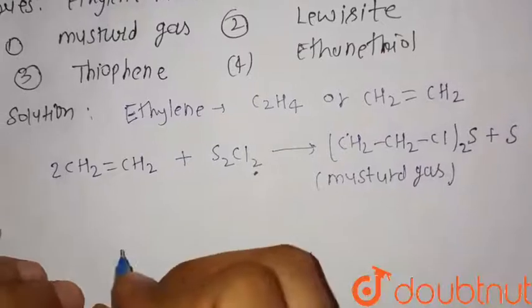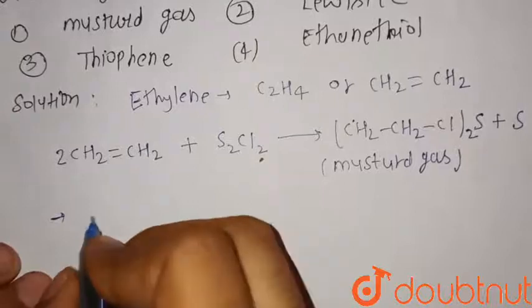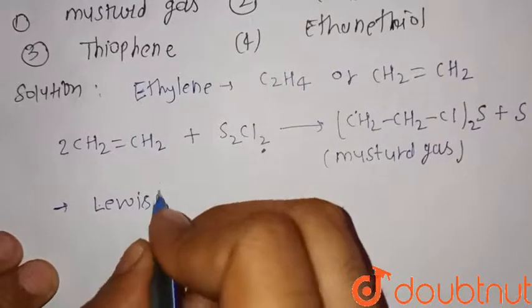Now we can see the chemical formula or the structure formula of the other given compounds also which is given in the options. So we know that lewisite is...